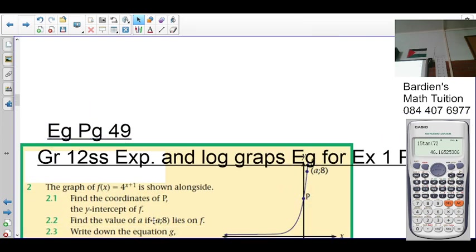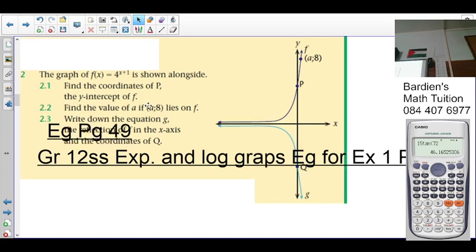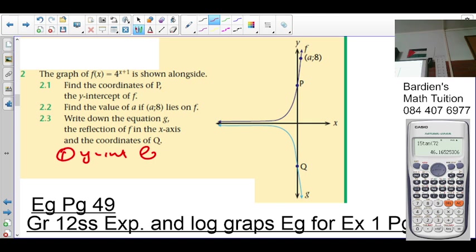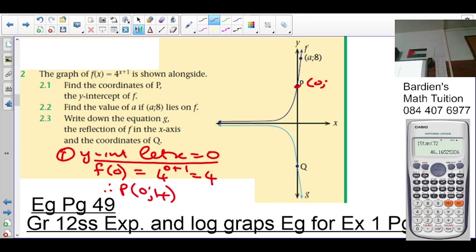Let's look at the next example. This is example 2, also on page 49. Here we have to look at the graph of f of x equal to 4 to the x plus 1 shown alongside. The question says find the coordinates of P, the y-intercept of f. How do you calculate the y-intercept? We let x equals 0. So f of 0, as you can see, it's on your y-axis. On your y-axis, x is 0. So f of 0 equals 4 to the 0 plus 1, which is 4. Therefore the coordinates of P is 0 and 4.